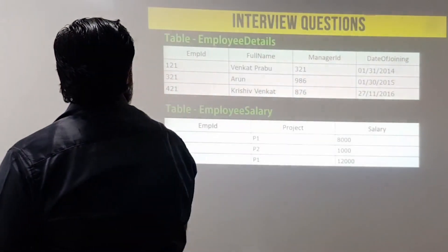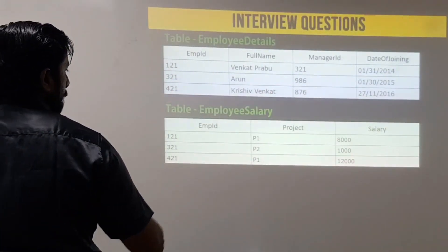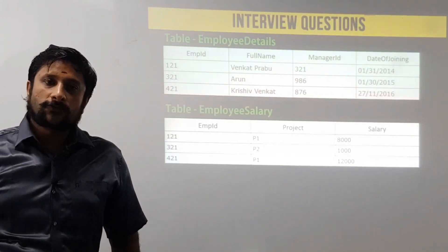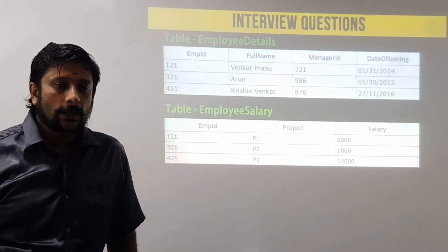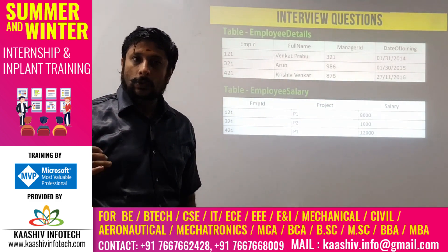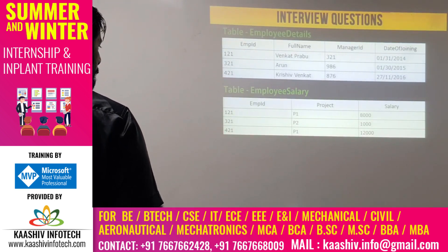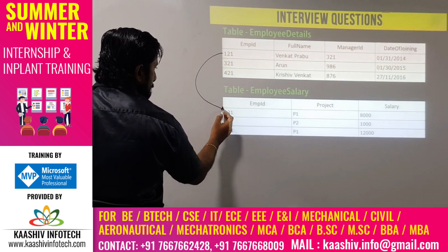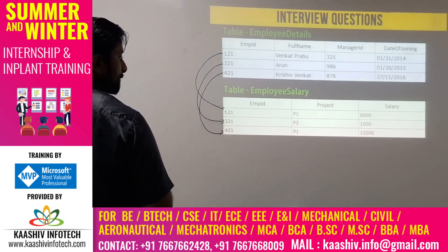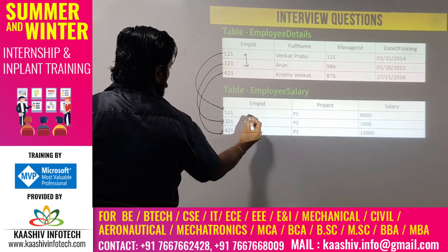This is the first question. I have a table called employee details with columns: employee ID, name, manager ID, and date of joining. There's also an employee salary table with employee ID, project, and salary. These questions are related to SQL queries. The two tables are linked via primary key and foreign key — this is called a relational database management system.